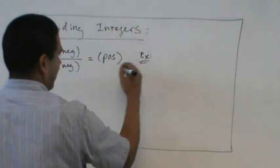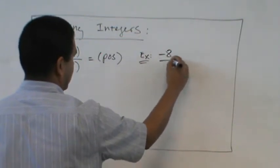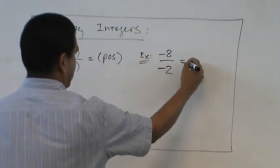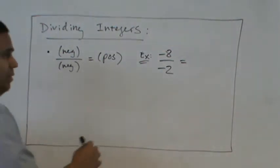And then we'll put an example right here. Negative eight divided by negative two is positive four.